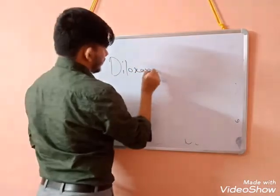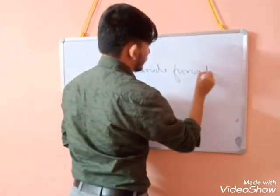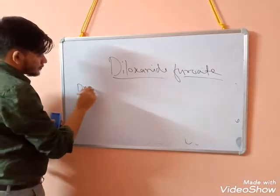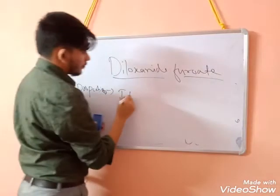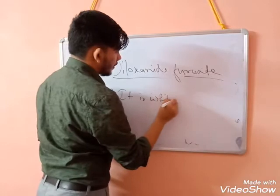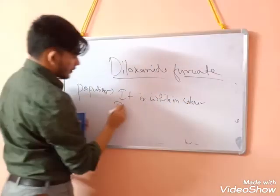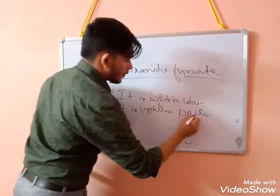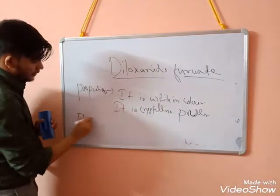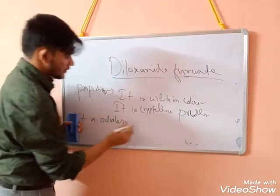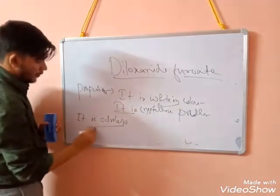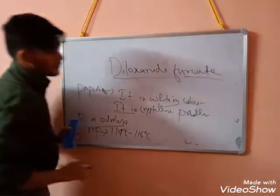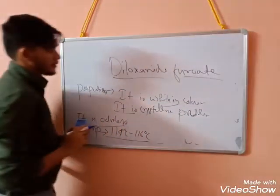Next, we will study diloxanide furoate. Going directly to its properties: it is white in color and a crystalline powder. It is odorless — no specific smell. Its melting point ranges from 114°C to 116°C.